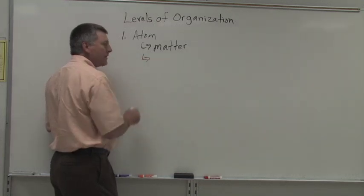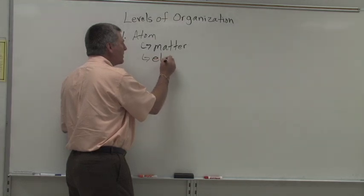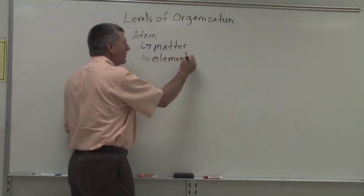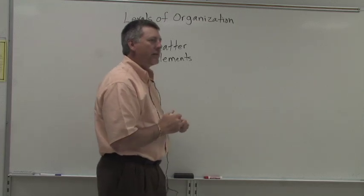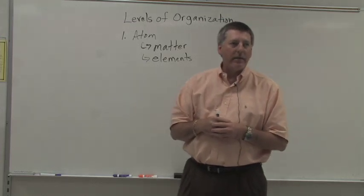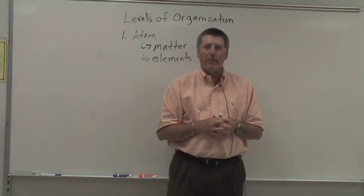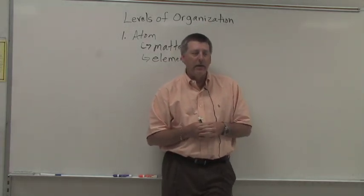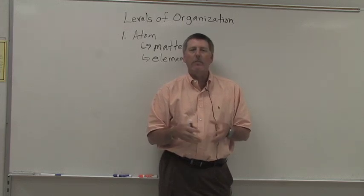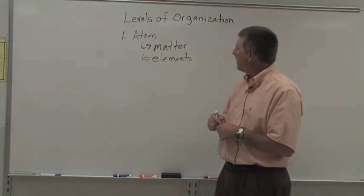There are different types of matter and the different types of matter are called elements. These elements are arranged in what we call a periodic table. Popular elements include things like gold, like to have a lot of that, or silver or platinum, hydrogen, helium, nitrogen, oxygen, carbon. All of these are different types of matter which we call elements.